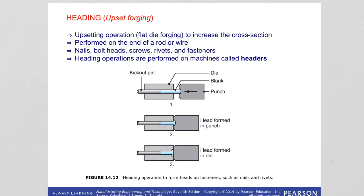Heading, also called upset forging, is an upsetting operation performed on the end of a rod or wire to increase its cross section. It is used for nails, bolt heads, screws, rivets, and fasteners, and can be carried out at any temperature — cold, warm, or hot. Heading operations are performed on highly automated machines called headers. Using a punch and die, the head is formed in the punch or in the die, as shown for nails and rivets.